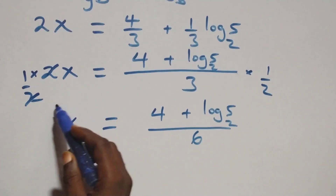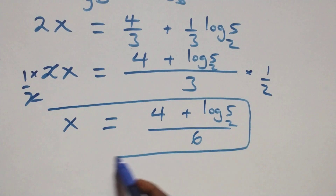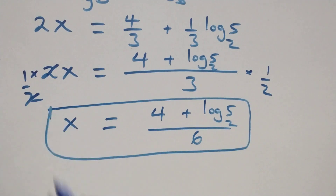So the value of x equals (4 plus log base 2 of 5) all over 6.